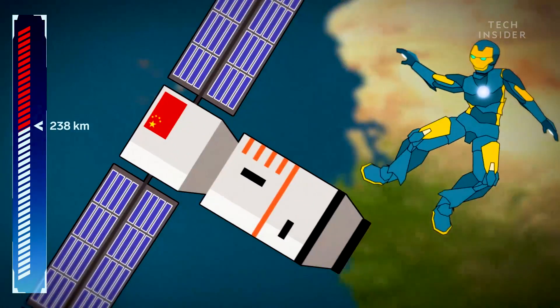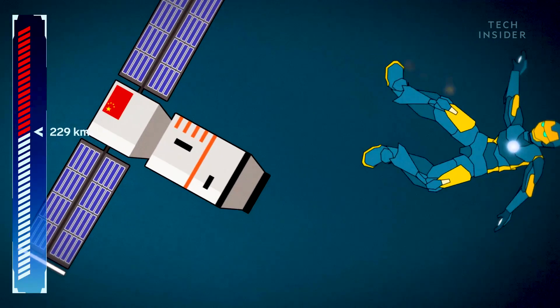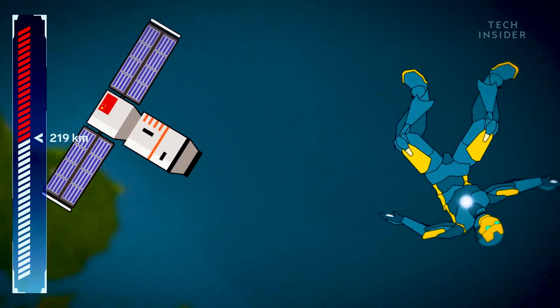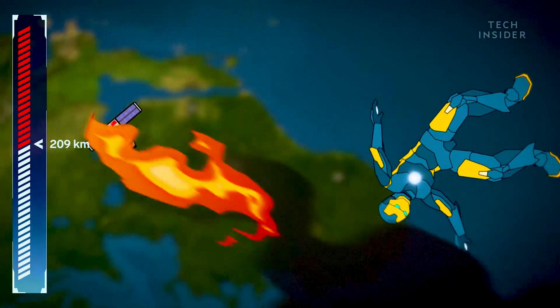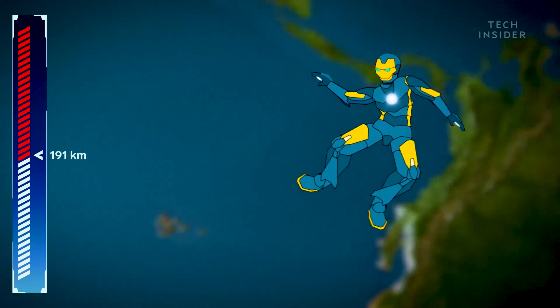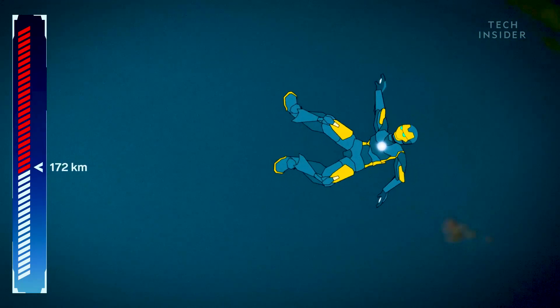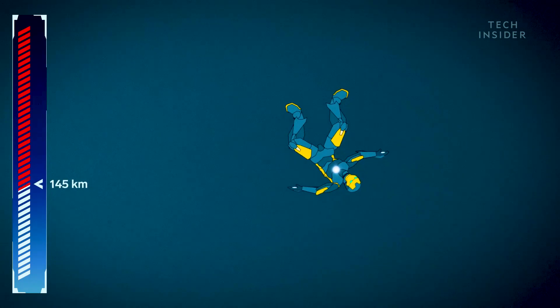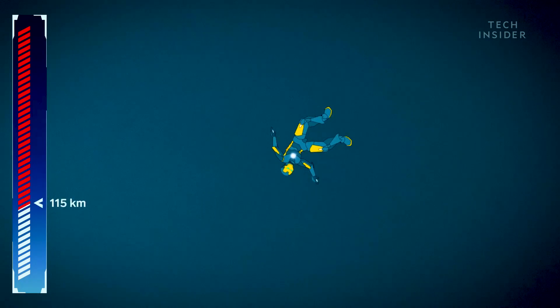The Chinese space station, Tiangong 1, for example, took about two years to fall out of orbit. On the ISS, you're higher up, so you'll take roughly two and a half years. But once you strike the atmosphere, your long wait is over, and it's go time.